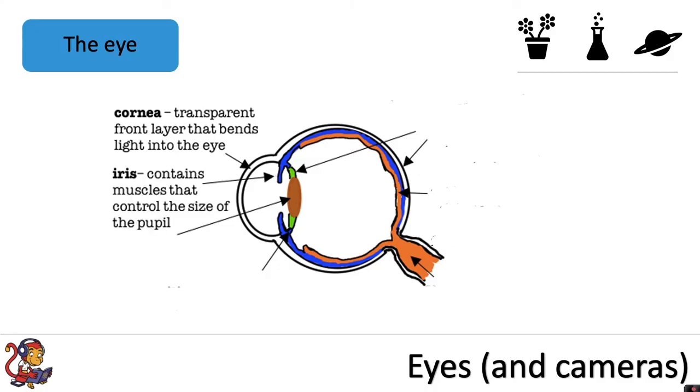The iris contains muscles that control the size of the pupil. The iris is the colored part of your eye and the pupil is simply the hole in the middle of the eye through which the light enters.